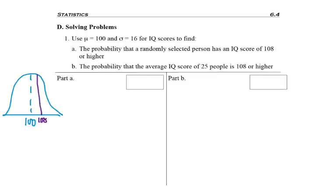I center it over 100 because that's my average, and 108 is the score I want to find. Of course, you don't have to draw the picture, but it did say 108 or higher. So am I in the shade to the left or to the right? Correct, I'm in the shade to the right.